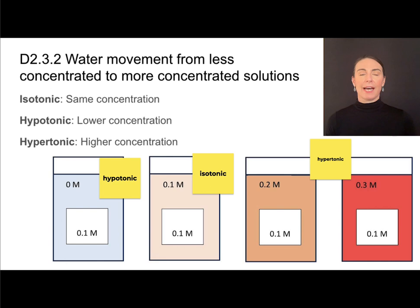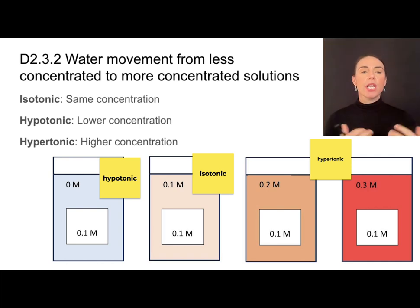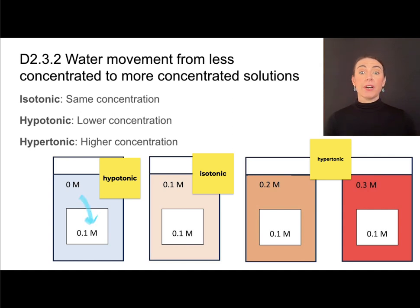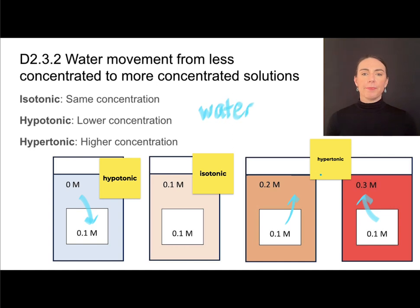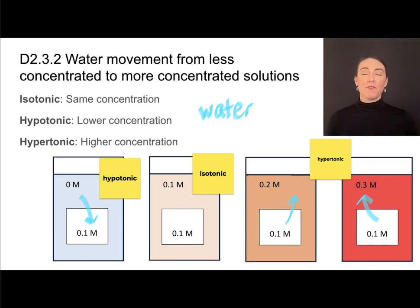These are very important terms going forward. Water is always going to follow areas of higher solute concentrations, so water would flow into a cell placed in a hypotonic solution. In an isotonic solution, you get a small amount of movement but it's the same in both directions, so we say there is no net movement of water.